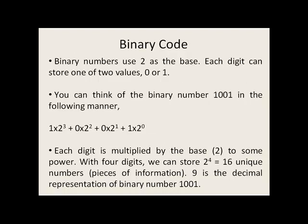Binary numbers use 2 as their base instead of 10. Each digit can store only one of two values, 0 or 1.